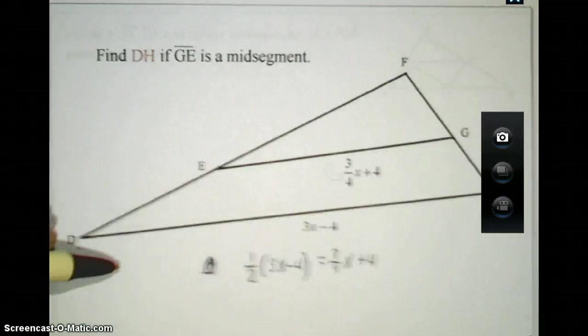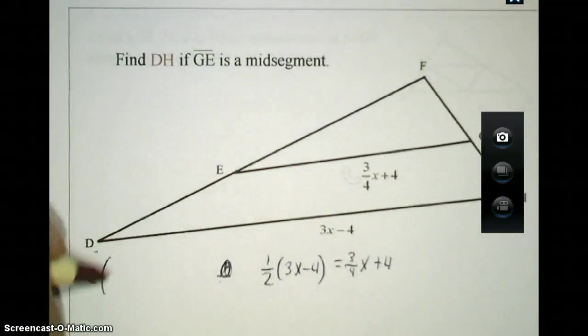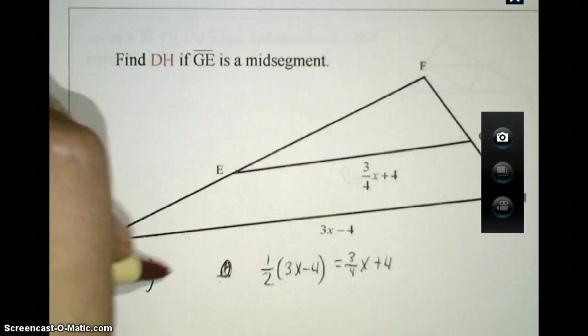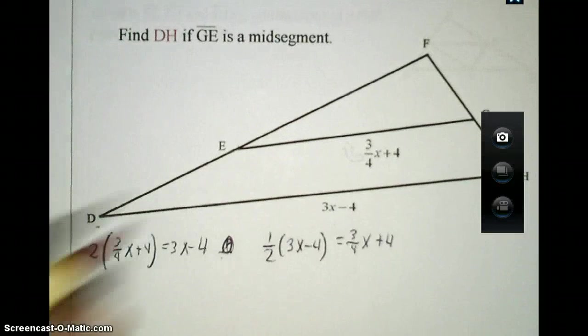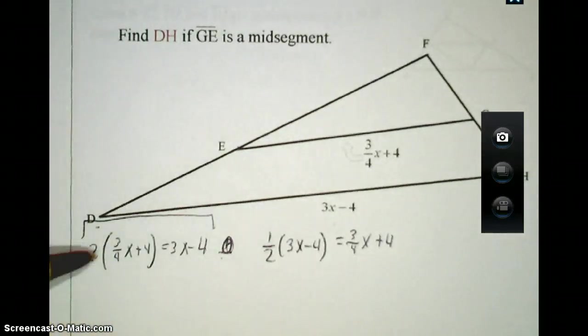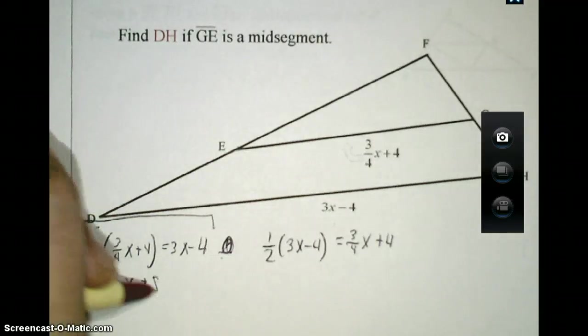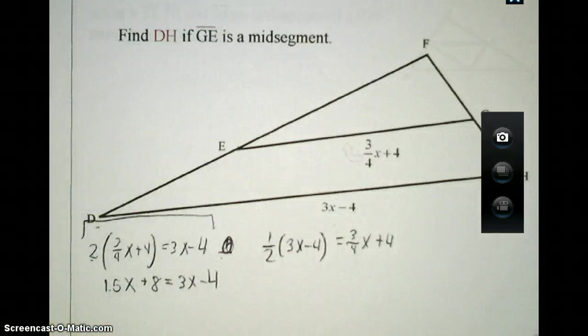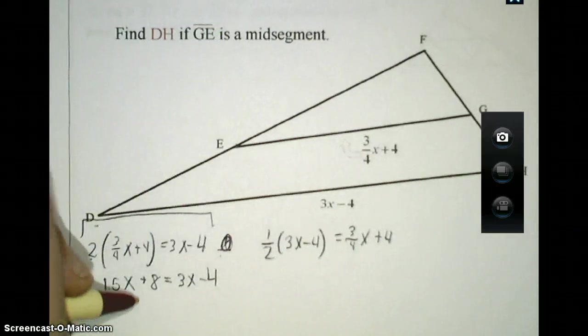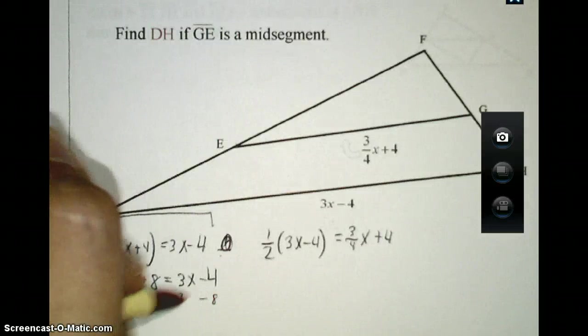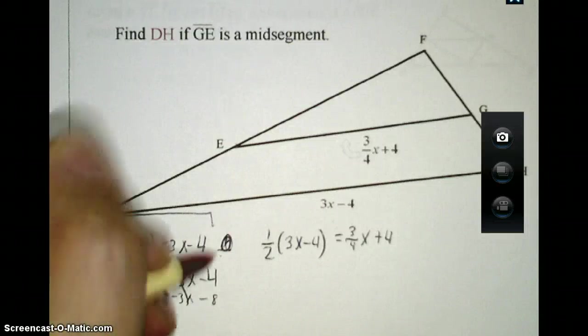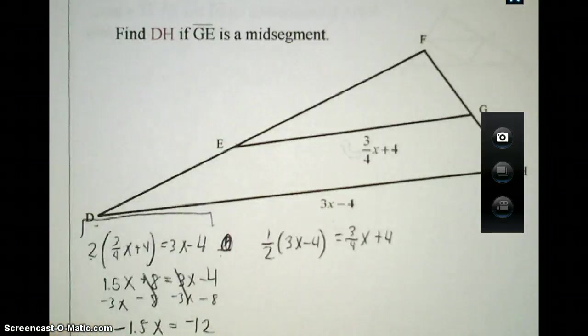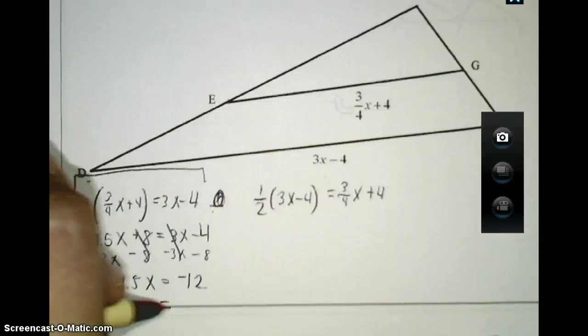That's one possibility, or you could have gone a different route. You could have instead said 2 times (three-fourths x + 4) will equal 3x - 4. Either way you solve this, you're going to end up getting the same result here. Going this route, I'll use the left equation here and we'll solve this one. Now, three-fourths times 2 ends up being three-halves or 1.5. 2 times 4 is 8, and at this point now, we're just solving the value for x. So when I do that, I will subtract 8 from both sides and I'll also subtract the 3x from both sides. I'll try to do two steps in one here. 1.5 minus 3 is negative 1.5x, negative 4 minus 8 is negative 12. Dividing both sides out here will give me an x value of 8.